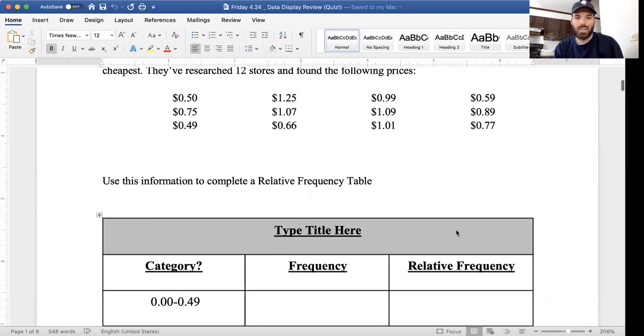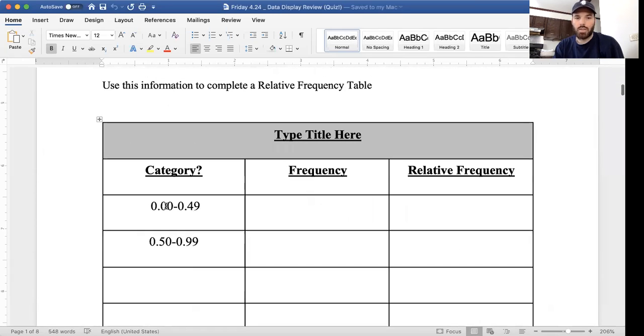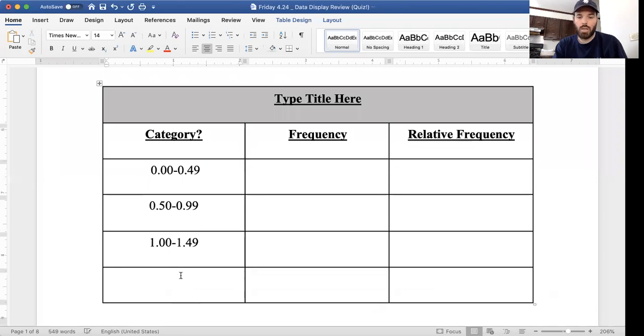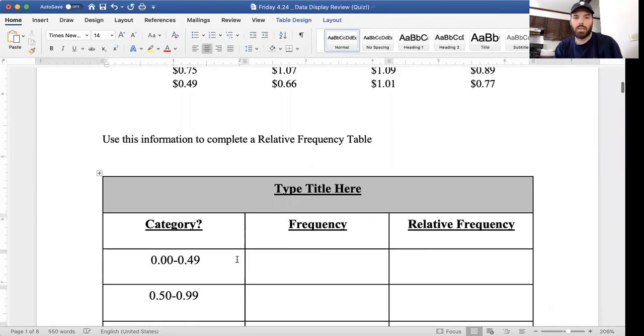Okay, looking at this first one, I actually gave you the intervals to start. Zero to 49 cents, 50 to 99 cents. The next one would be $1 to $1.49 and then the last one would be $1.50 to $1.99.